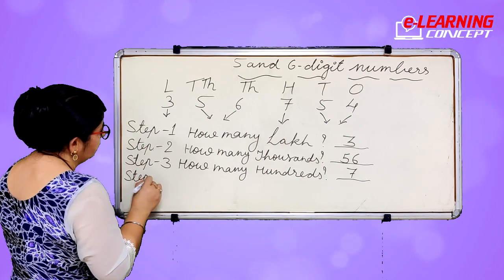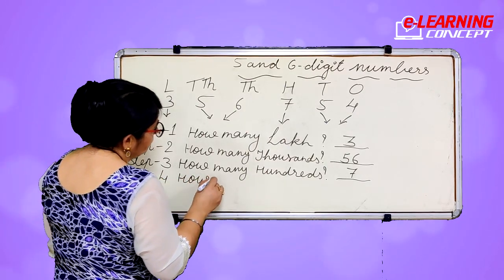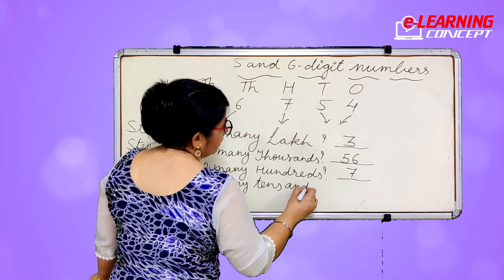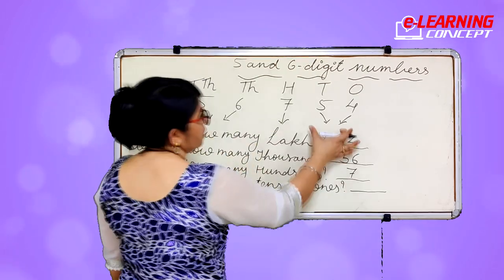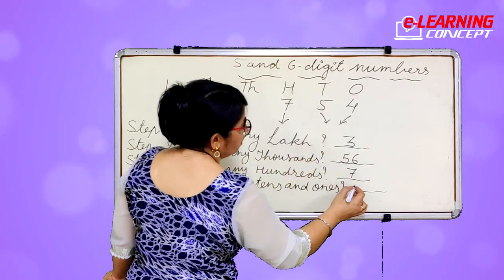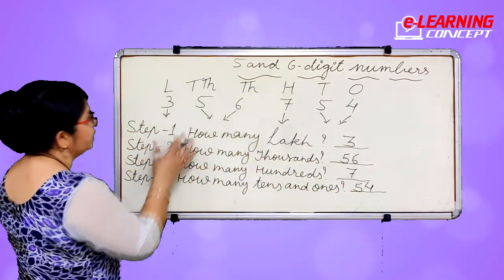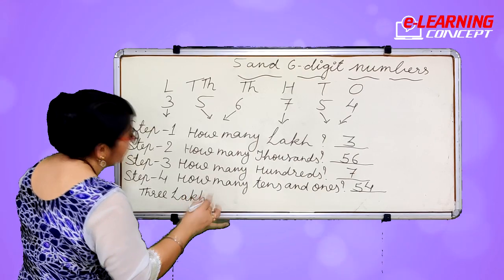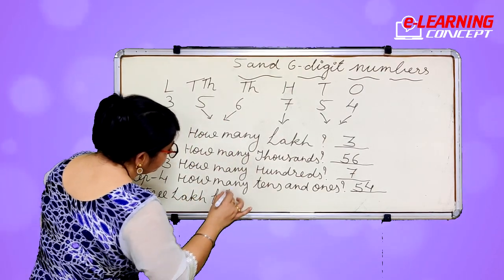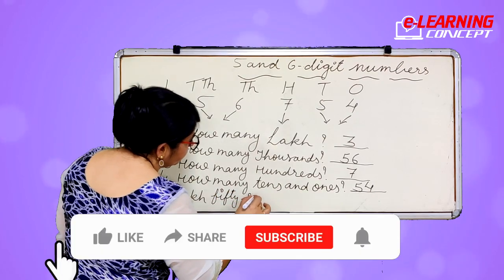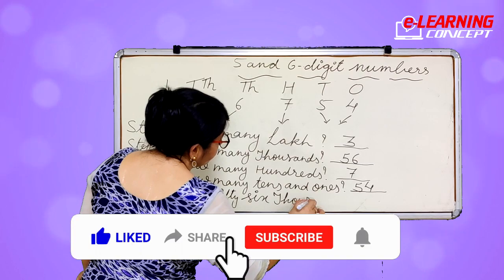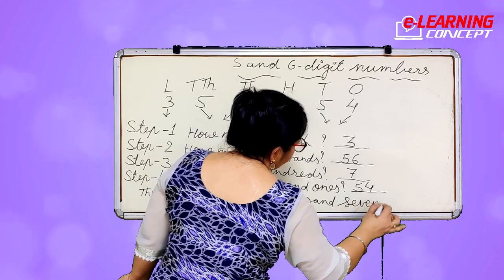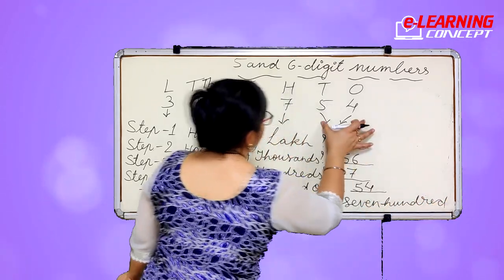Step 4: how many tens and ones? Tens and ones come together — this is 54, fifty-four. So we will read it as three lakh, fifty-six thousand, seven hundred, and fifty-four.